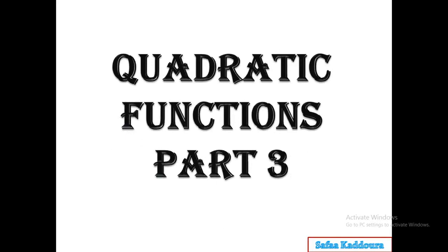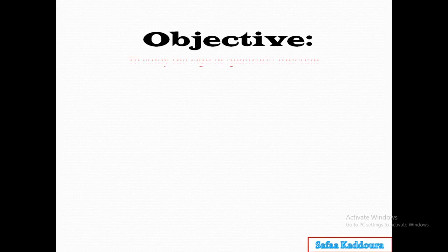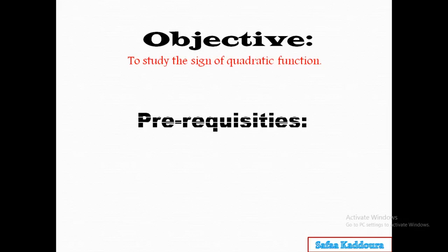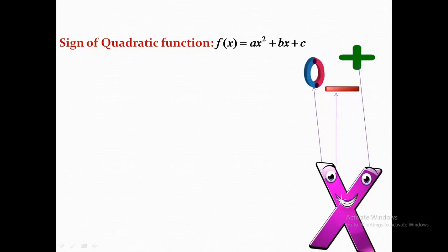My 2H students, today we will continue our lesson on quadratic functions. Our objective for this video is to study the sign of a quadratic function. Last time we studied the sign of a linear function and knew how to draw its table of sign. Today we will know how to draw the table of sign of a quadratic function, second degree. We should remember how to find the discriminant delta and how to find the roots. Let's start.